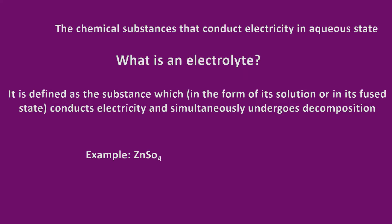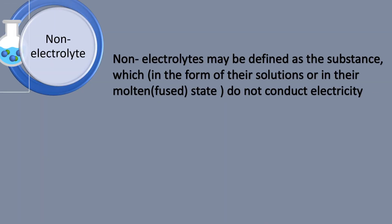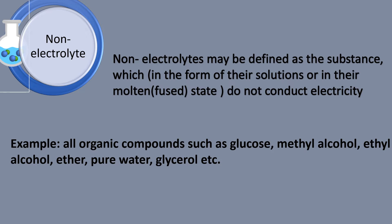For example, zinc sulfate dissociates to give zinc ion plus sulfate ion. Non-electrolytes may be defined as substances which, in the form of their solution or in their molten state, do not conduct electricity. For example, all organic compounds such as glucose, methyl alcohol, ethyl alcohol, ether, pure water, glycerol, etc. These organic compounds readily dissolve in water, but because they do not dissociate inside the solution into ions, they are considered non-electrolytes.